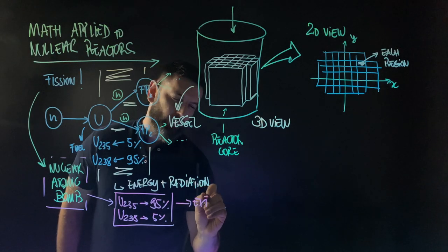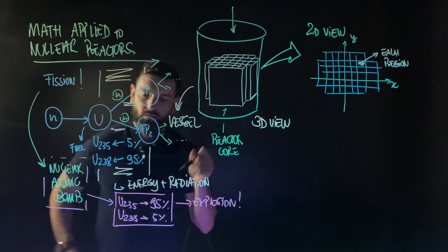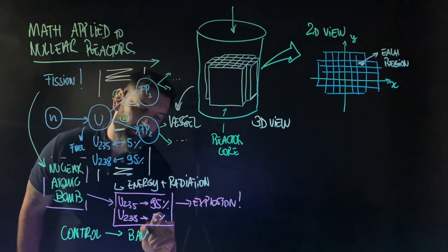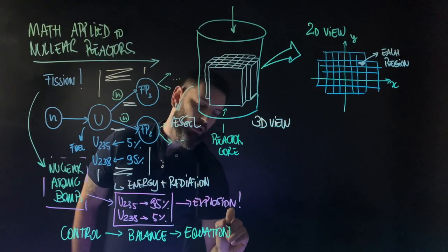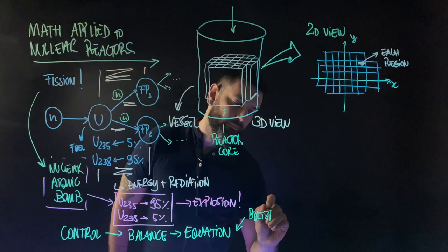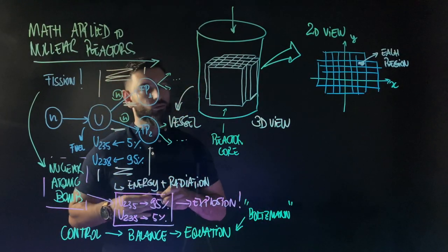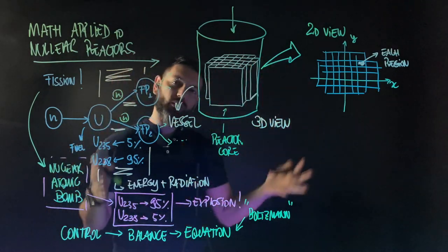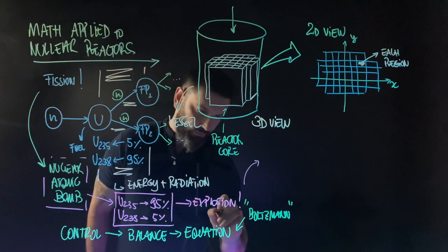What do we need to understand this entire process? We need control, and this control comes down to a balance. And balance comes to an equation for us mathematicians. This equation is very special — we have a special equation, the Boltzmann transport equation, which was originally used to study the transport of gas. But here we use it for neutrons. We need to understand this balance to understand all this process inside the nuclear reactor. When we take this equation, we can start with small things — a perfect balance to understand all this process.